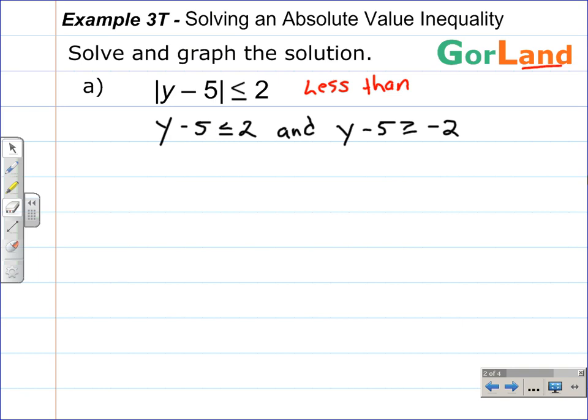So then we have to solve each inequality separately. We'll do that by adding 5 to each side. On the left-hand side, the minus 5 and plus 5s go away because they're opposites, leaving us y. Bring down the inequality. 2 plus 5 is 7. Bring down the AND. On the right-hand side, we solve in the same manner by adding 5 to each side. The minus 5 plus 5s are opposites. They go away. Bring down the inequality. y is greater than negative 2 plus 5 is 3.